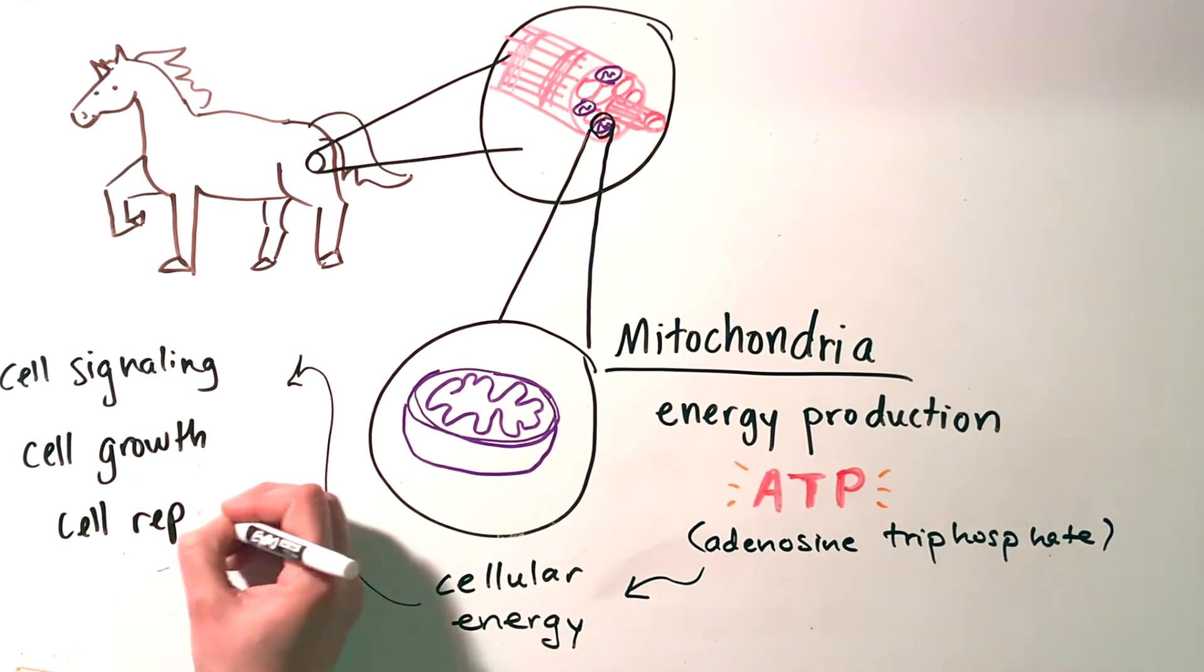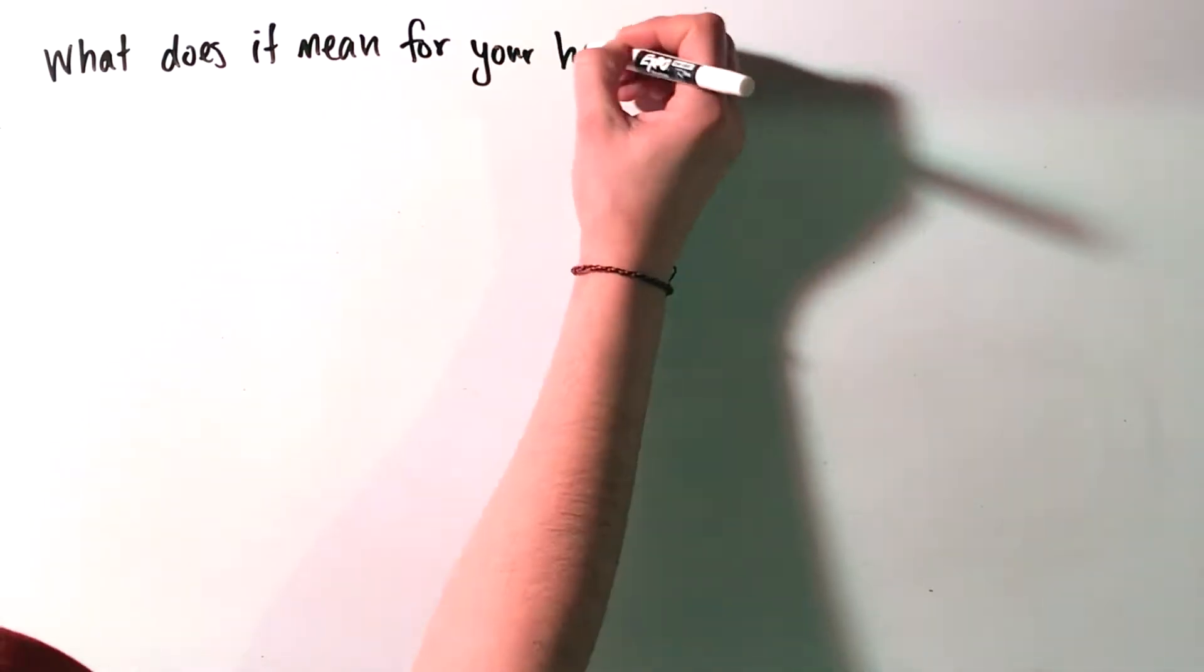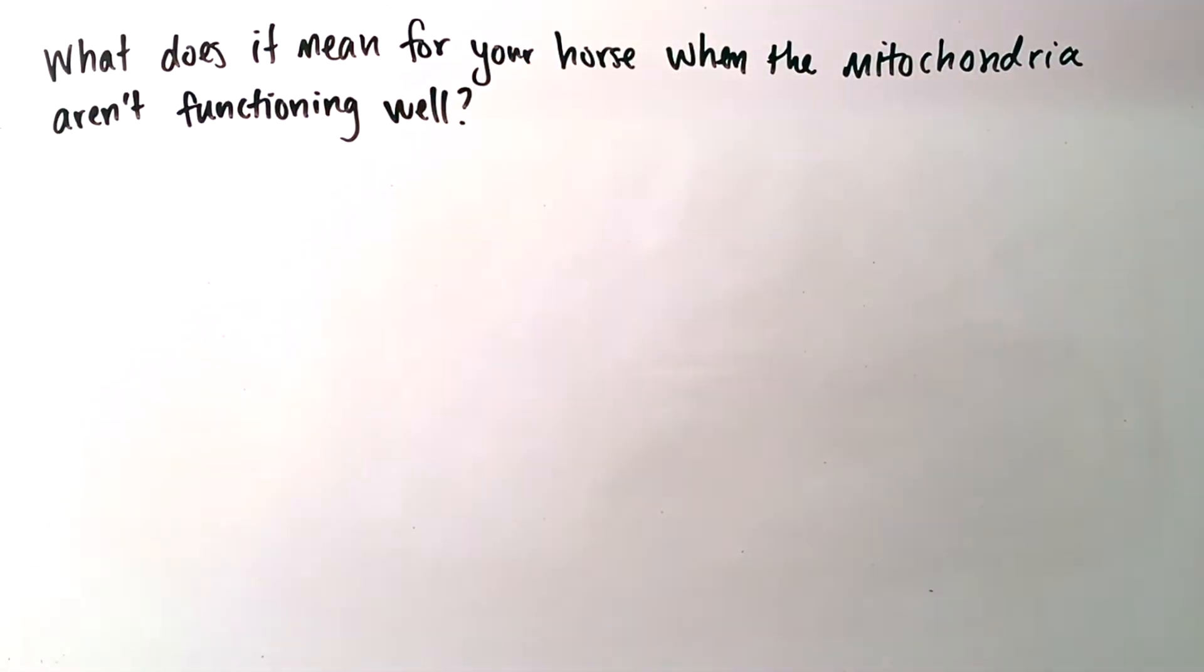Mitochondria are critical for cellular signaling, growth, and repair. But what does it mean for your horse when the mitochondria aren't functioning well?